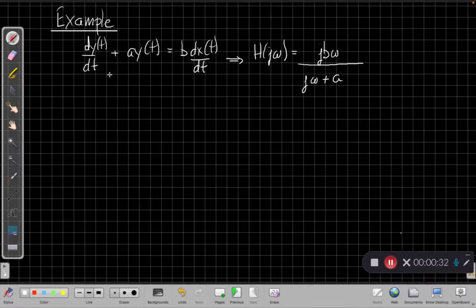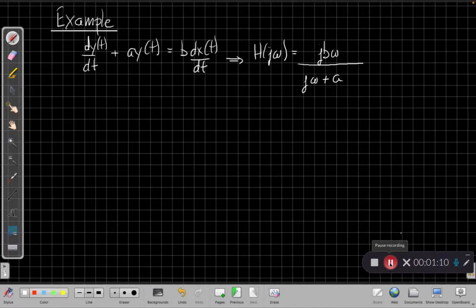So again, as we saw in the last video, for this example, dy/dt plus ay(t) equals b times dx/dt, simple first-order differential equation, we found that H(jω) was a high-pass filter with frequency response jbω over jω plus a. And then when we sketched this, we found that the frequency response was an approximate, very approximate, non-ideal high-pass filter, where as ω goes to infinity, the gain is b, and as ω goes to zero, the gain is zero, and ω equals a is the half power point between.